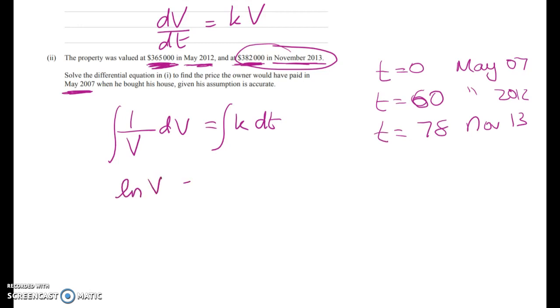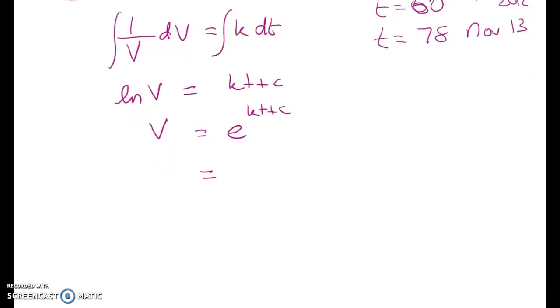That gives me our usual pattern of log of v is equal to kt plus c, giving me v equals e to the kt plus c, which we can write like this. This is equal to A e to the kt.